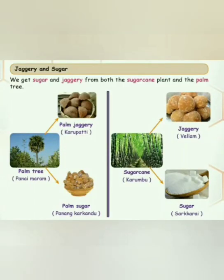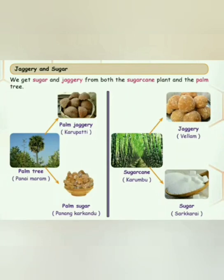Jaggery and sugar are used to add sweetness and flavor in daily food. We use sugar and jaggery in tea, coffee, and in making different kinds of sweets. We get jaggery from the palm tree (panai maram) — palm jaggery is called karupatti vellam and palm sugar is called panankarkandu. From sugar cane, we get the regular jaggery (vellam) and sugar (sarkarai).